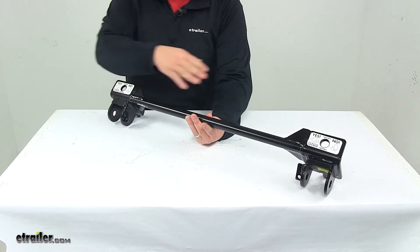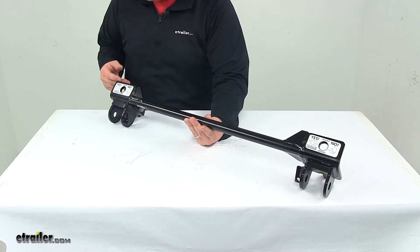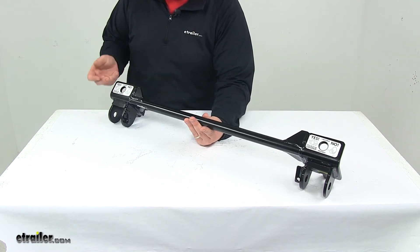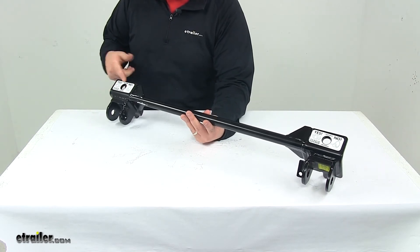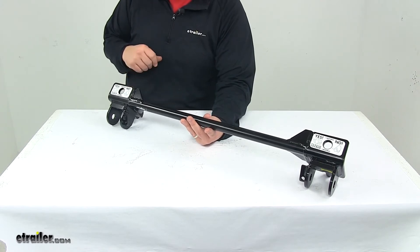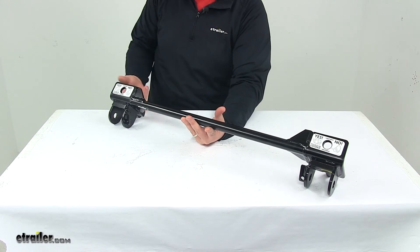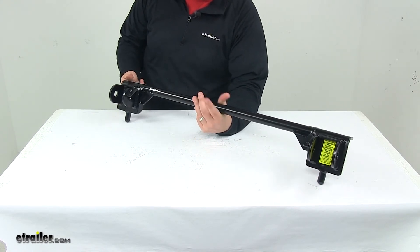It has instructionals on top that show you the proper way that the pin locks and of course the improper way. Not engaged and engaged - it goes over that very visibly so you can get that visual indicator of what's secured and what's not.